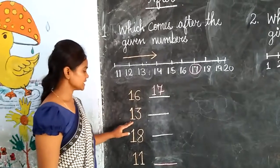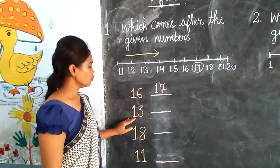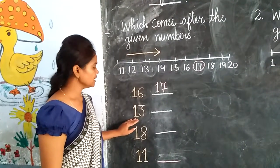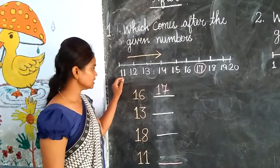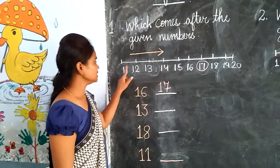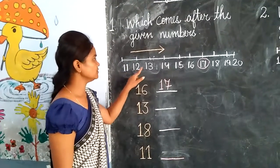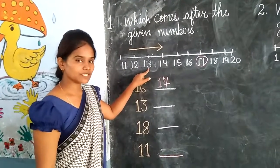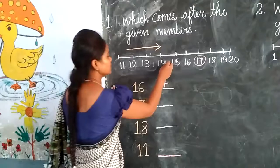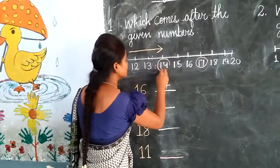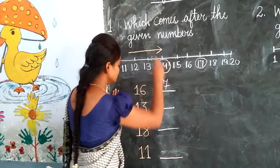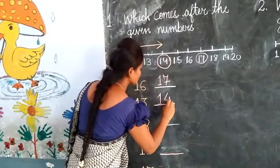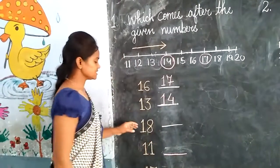The second number is 13. What comes after 13? We will count the number: 11, 12, 13, 14, 15.